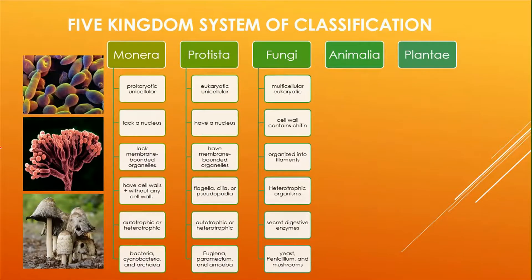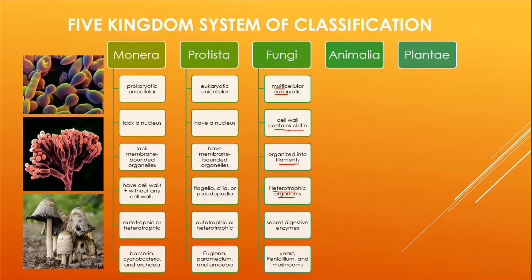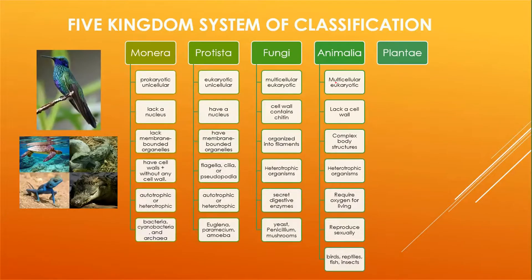The third kingdom is Fungi. Multicellular eukaryotic organisms are present in Fungi. Multicellular means they are made up of more than one cell. Their cell wall contains a special substance known as chitin. They are organized into filaments and are heterotrophic organisms, meaning they cannot prepare their own food. They secrete digestive enzymes to degrade organic material and absorb nutrients for growth. Examples include yeast and mushrooms.